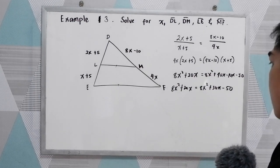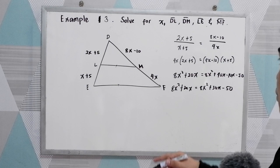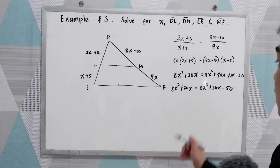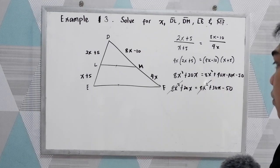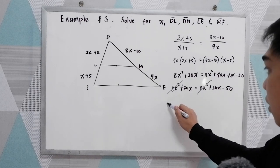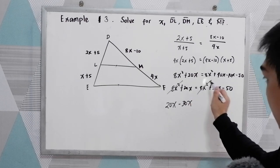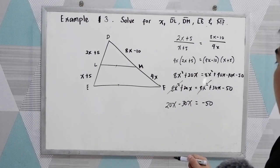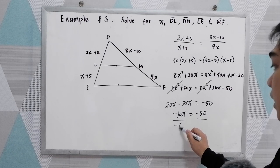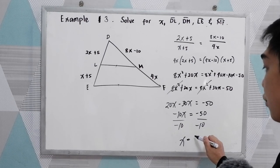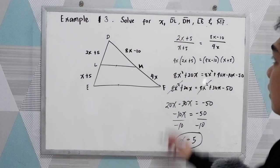Combining like terms, 8X squared plus 20X equals 8X squared plus 30X minus 50. Since this appears quadratic, we use the addition property of equality — the 8X squared terms cancel. Solving: 20X minus 30X equals negative 50, so negative 10X equals negative 50, and dividing by negative 10, X equals positive 5.